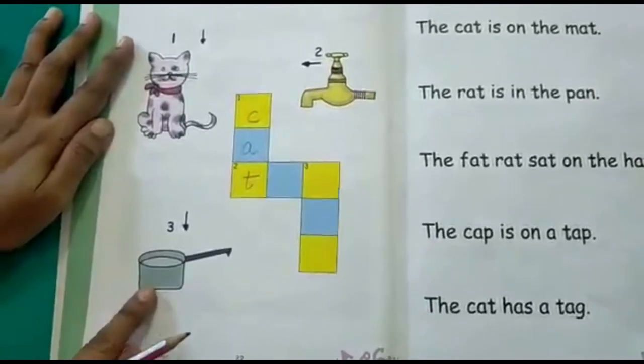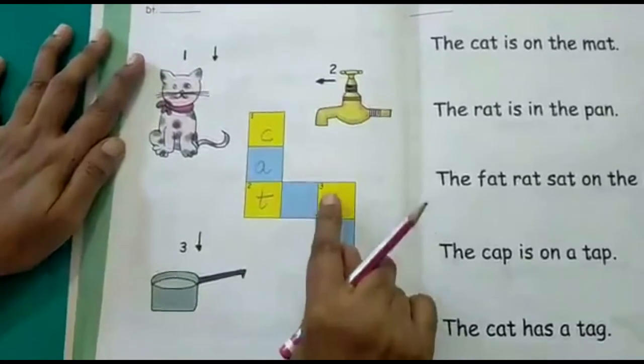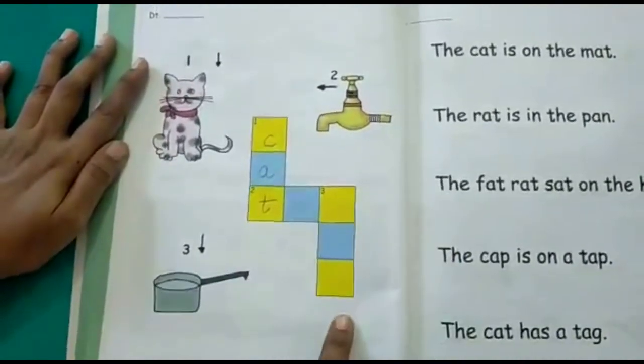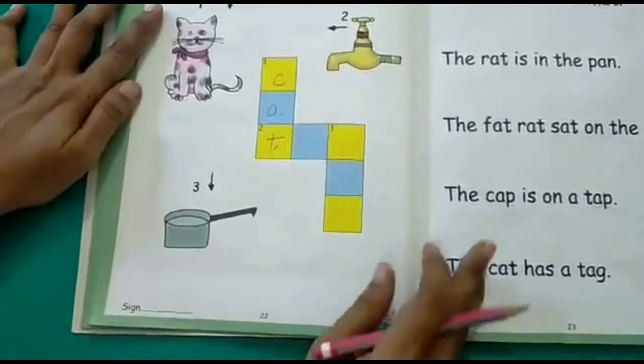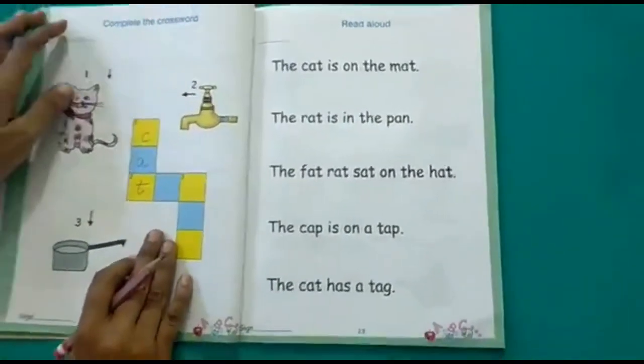The third picture is of a pan and pointing downwards. Where is number 3 written? It is here. So here you have to write the spelling for pan. That's easy, right? So you have to complete the rest of the crossword.